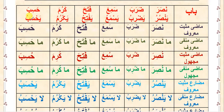So in future you will not commit a single mistake, because in the task you sent me previously there were a lot of i'rab mistakes from bab sami'a and from bab zaraba. You made a mistake in creating fi'l mudari majhool in bab sami'a - there is an i'rab mistake in fi'l mudari majhool in each saga.